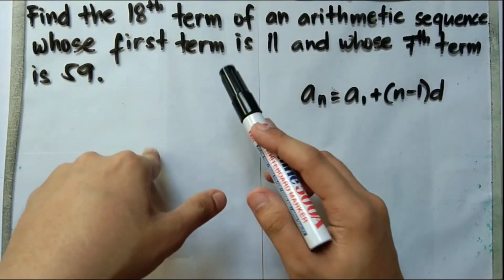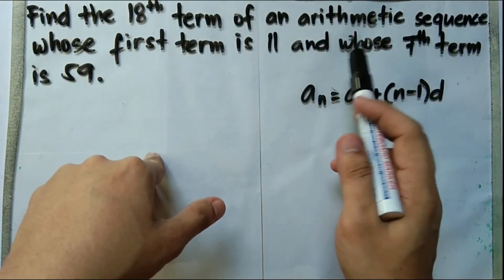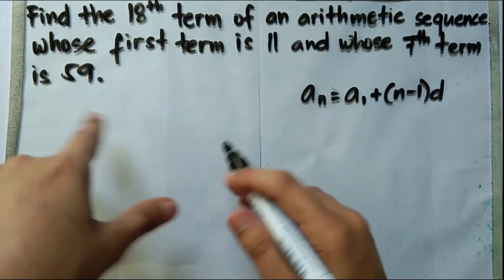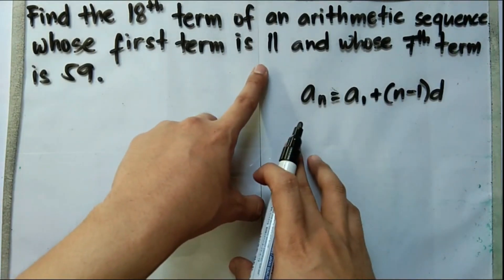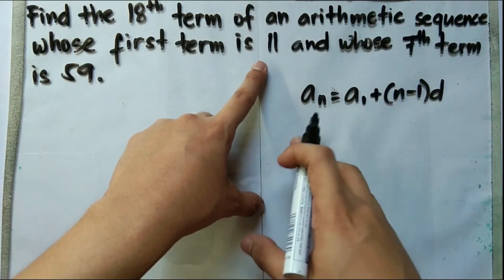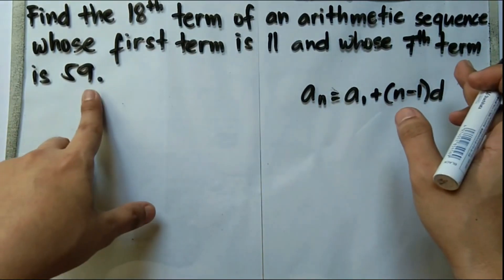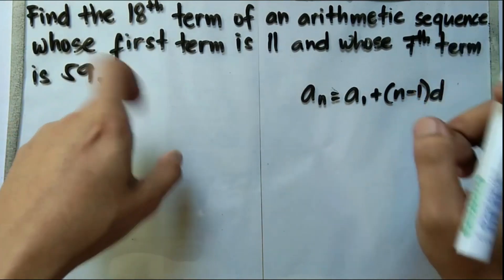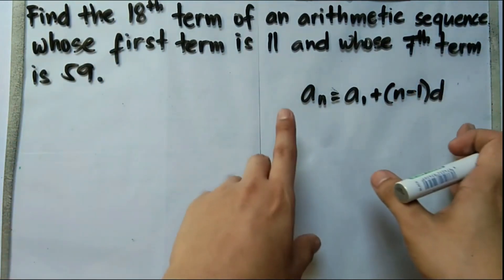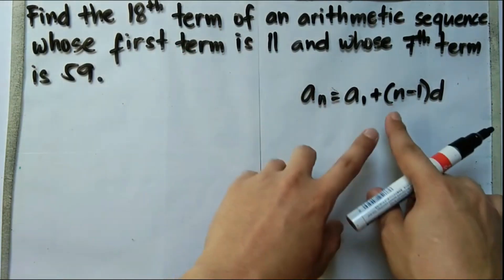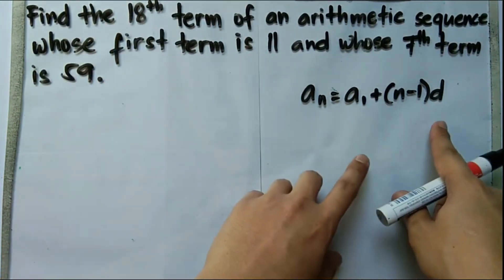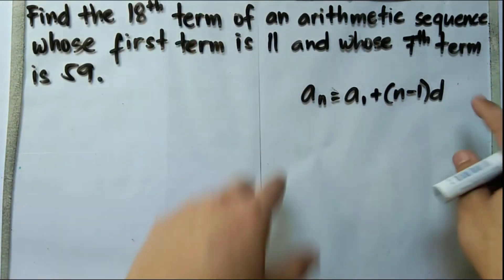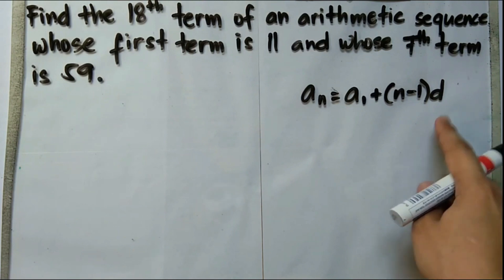Third example, find the 18th term of an arithmetic sequence whose first term is 11 and whose 7th term is 59. Now notice in this example, the first term is given, that's 11. An indicated term, which is the 7th term, 59, is also given. And it asks for another indicated term, or the 18th term. Now if we would look on our formula, a₁ is given, n is given. But the common difference is missing. So in order for us to find the 18th term, we need to solve first for d, or the common difference.